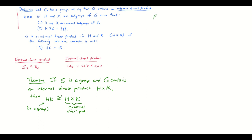We're going to prove this by first showing that HK really is a group — in fact, it's a subgroup of G — and then we're going to develop an isomorphism from the external direct product to this subgroup HK and show those are isomorphic. So let's show HK is a subgroup of G.